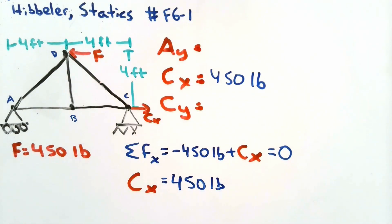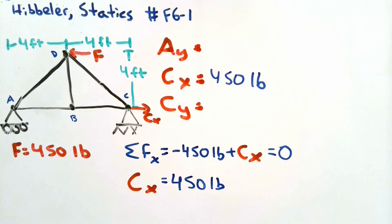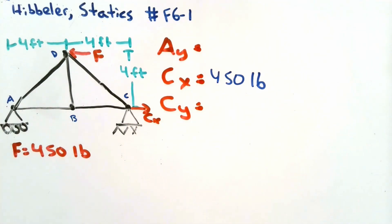So we found the force of the hinge. We could try to take the sum of forces in the y direction, but you'll notice that we will end up with two unknowns, Ay and Cy. So that may not be the best equation to use. If we take a sum of moments, however, we could reduce our equation to only one unknown. It doesn't really matter if I take my sum of moments about the A or the C joint, because they will both end up with only one unknown. But I will take the C joint so that I can find my reaction force at A first.